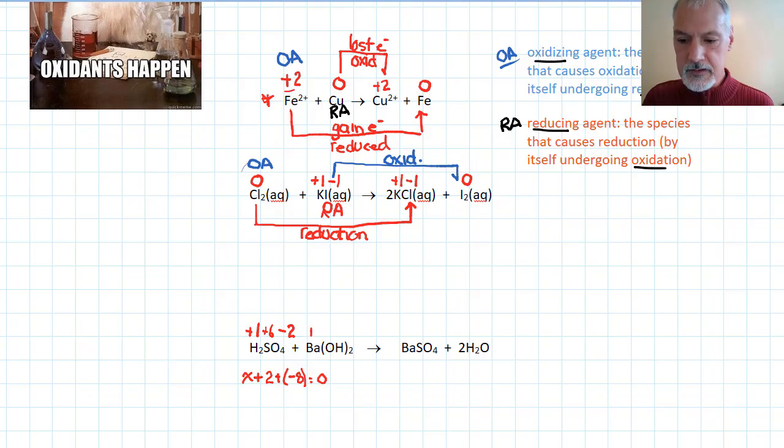Barium, being in that particular family, is plus 2. Oxygen minus 2. Hydrogen plus 1. Over on this side, again, barium is plus 2. Oxygen minus 2. And again, solving for sulfur, it'll be the same as before, as plus 6. Oxygen minus 2. Hydrogen's plus 1.